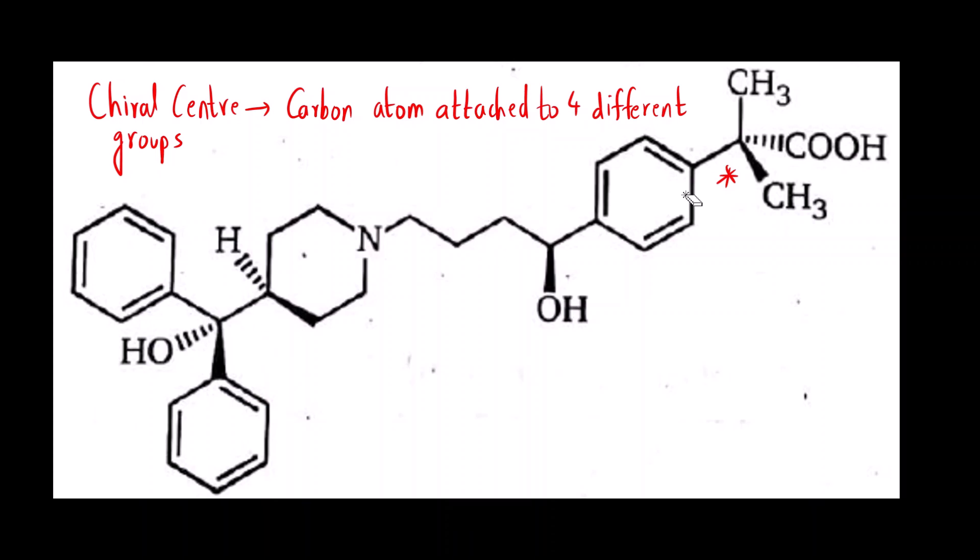Let us see one by one. In benzene ring, all are sp2 hybridized carbon. It has trigonal planar geometry. Plane of symmetry is present. These are achiral. Forget about the carbons of the benzene ring, they are going to be achiral. Let us first see this carbon.